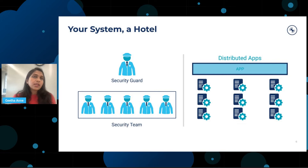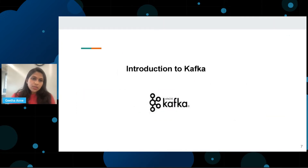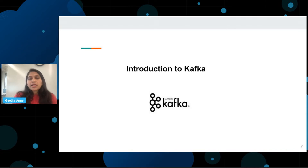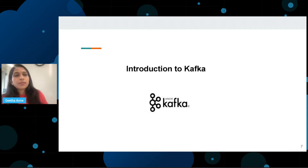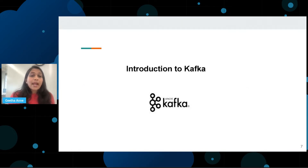Kafka Streams helps you build apps and microservices where input and output is controlled by Kafka cluster. It combines the simplicity of writing and deploying standard Java and Scala apps on the client side with the benefits you draw from Kafka's server-side technology. In order to understand Kafka Streams, you need to know what Kafka is. Kafka is basically a distributed, scalable, elastic, fault-tolerant event streaming platform that was built at LinkedIn.